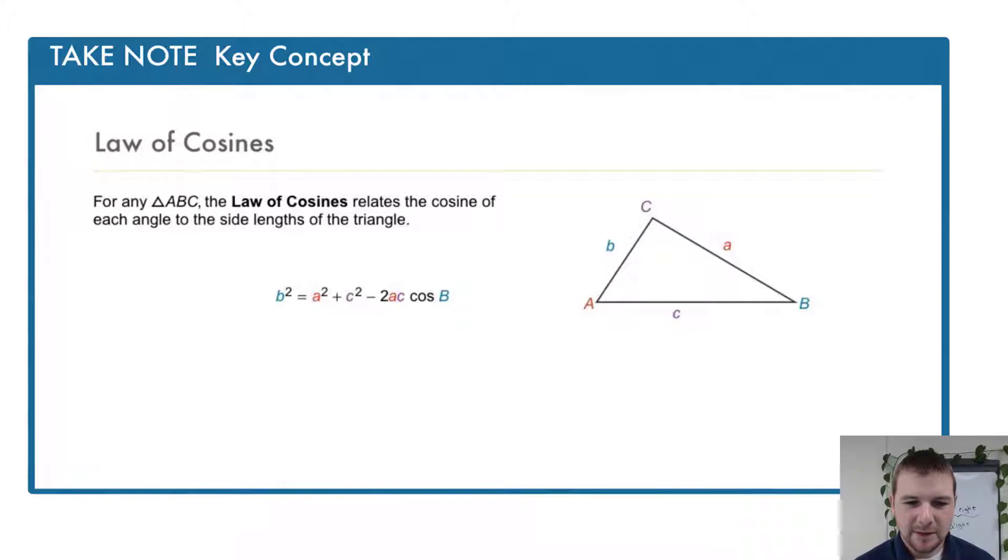We can also relate using the equation b squared equals a squared plus c squared minus 2ac times the cosine of B.